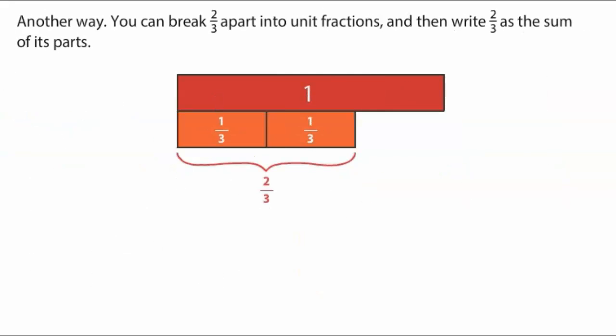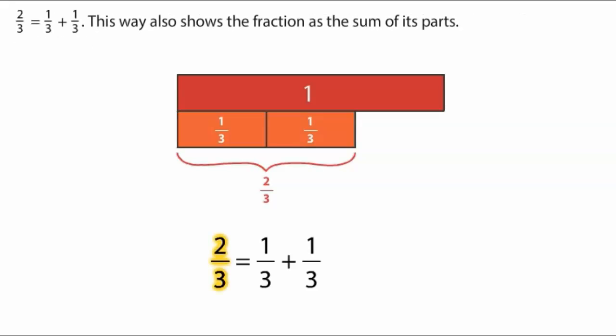You can break two-thirds apart into unit fractions. And then write two-thirds as the sum of its parts. Two-thirds equals one-third plus one-third.